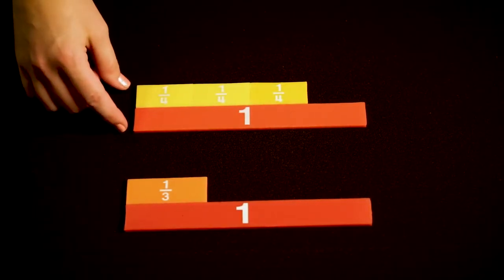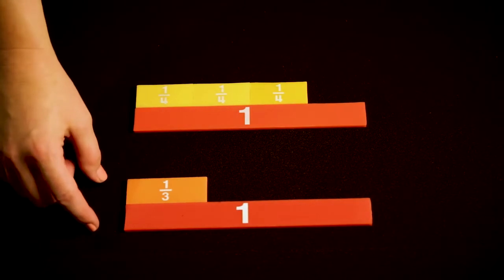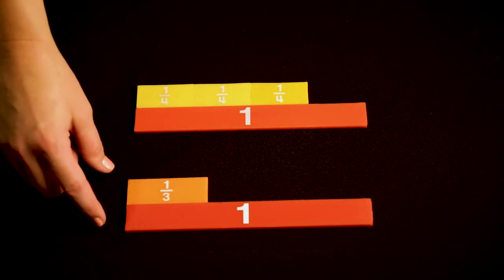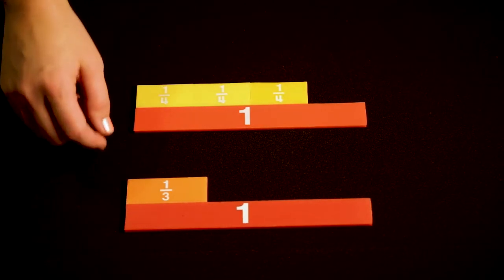We are going to subtract 3 fourths minus 1 third. Because these fractions do not have the same or a common denominator, it's kind of difficult to figure out how many I need to take away with this set of 1 third.